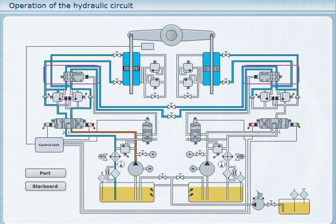By linking both sides of the hydraulic system, we have the maximum torque available to move the rudder. You can click on the buttons marked Port or Starboard to give a rudder command and view the hydraulic oil flow.